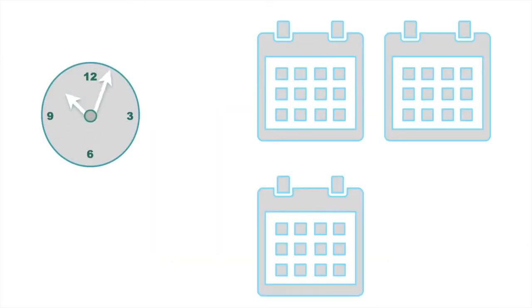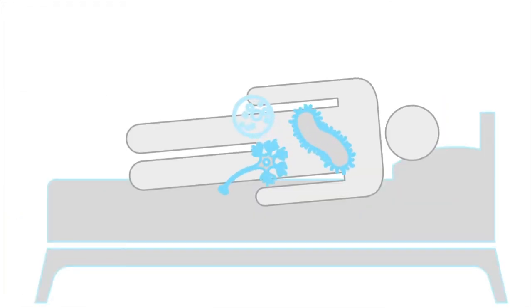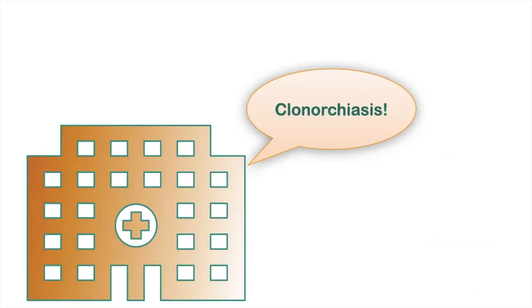But after four weeks, we all started to have some fever-like symptoms, nausea, skin rashes, as well as some stomach swelling. We went to the local clinic because we were not sure what was wrong. We were then diagnosed with clonarchiasis, which is the infection with the liver fluke Clonorchis sinensis.